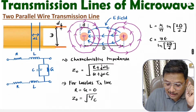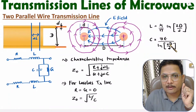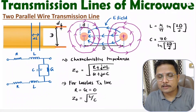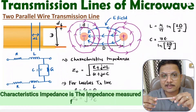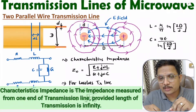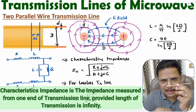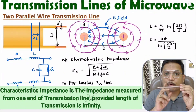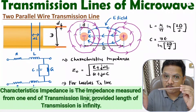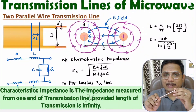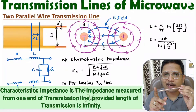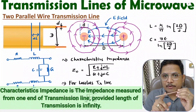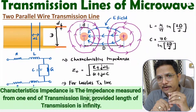For the two parallel wire transmission line, L and C equations have been mentioned. That is how one can identify characteristic impedance. Characteristic impedance is the impedance of the transmission line provided the length of the transmission line is infinite. If you measure impedance from one end, that will be the characteristic impedance, and you can measure it from any of the ends.